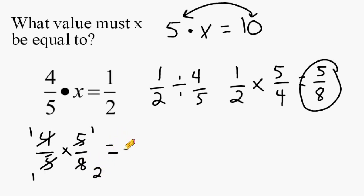And at the end, we multiply the remaining numerators. That would give us a product of 1, and multiply the remaining denominators, and that would give us a product of 2.